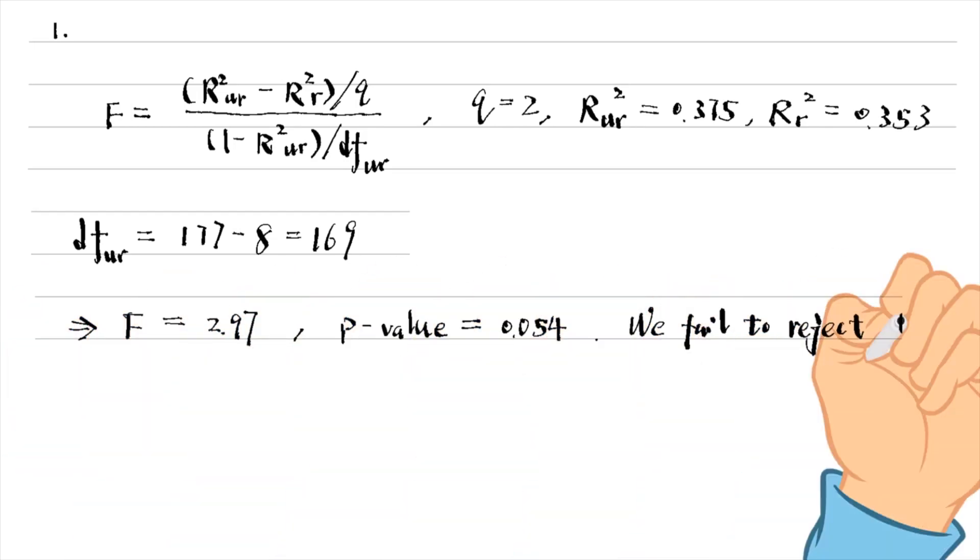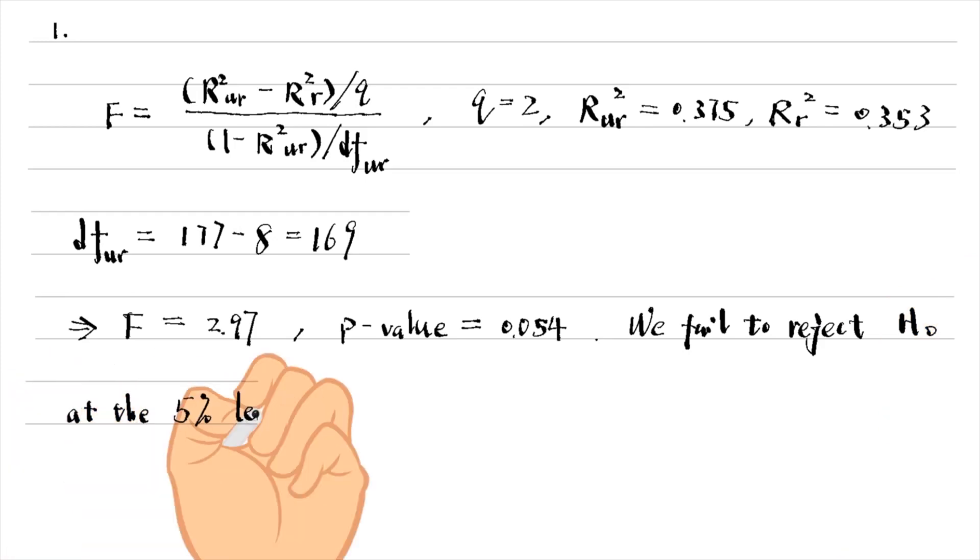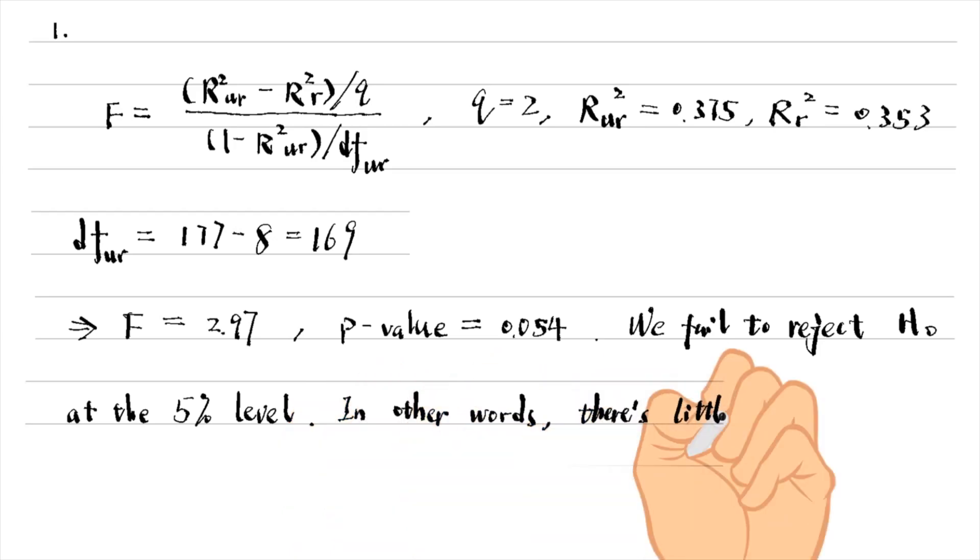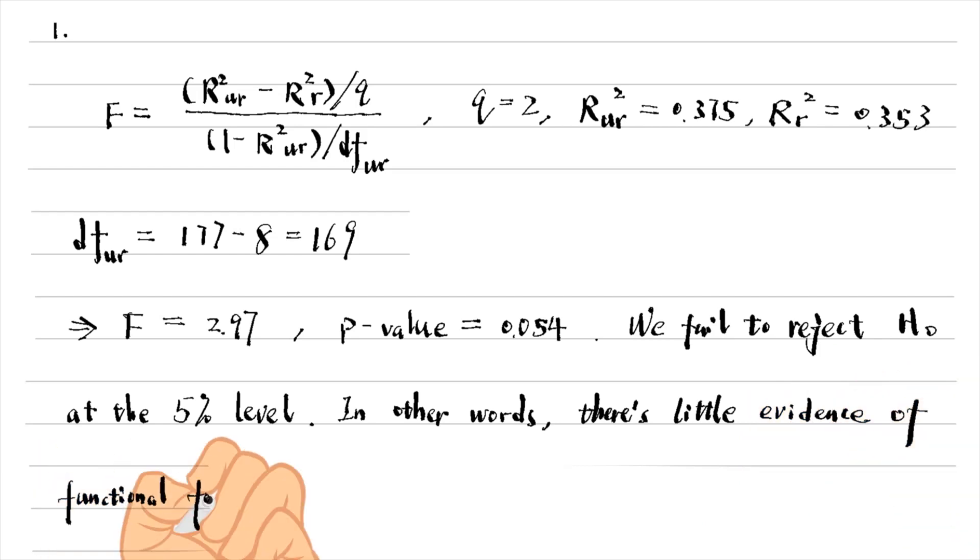We fail to reject the null hypothesis that the two squared terms are both zero at the 5% level. In other words, there is little evidence of functional form misspecification at this significance level.